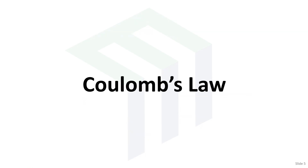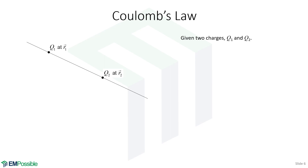Coulomb's law. Up to this point, we've seen two things. In previous videos, we saw that charges have electric fields around them. And in this video in the beginning, we saw that if we have an electric field, it will put a force on a charge that resides in that electric field. So now if we have two charges, the field due to one charge will put a force on the other — a charge cannot put a force on itself, so it takes two charges.